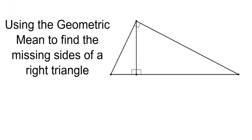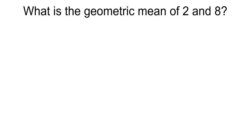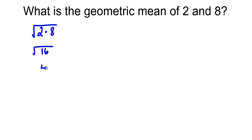First, let's look at what a geometric mean is. What if I asked you to find the geometric mean of 2 and 8? The way that you find the geometric mean between two numbers is you multiply those two numbers together and then take the square root of your answer. So in this case, I would have the square root of 16, which is 4. So the geometric mean of 2 and 8 is simply 4.